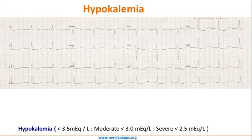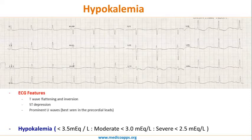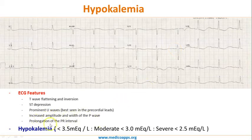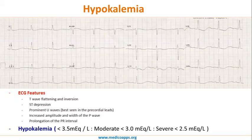In hypokalemia, the classification is less than 3.5 (mild), less than 3 (moderate), and less than 2.5 (severe). The ECG changes include T wave flattening and inversion, ST segment depression, and prominent U waves visible in precordial leads. There is also increased amplitude and width of the P wave and prolongation of the PR interval. The most characteristic change overall is T wave flattening or inversion.